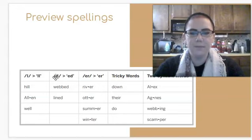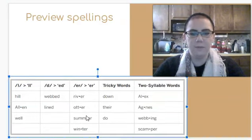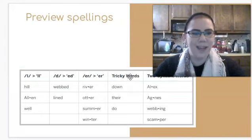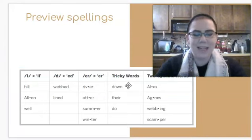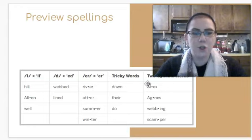I see Allen has a capital A, so I think it's going to be the name of something or a person. These have that d sound. Webbed. Lined. Some words with er. River. Otter. Summer. Winter. And some tricky words. Down. There. Do.